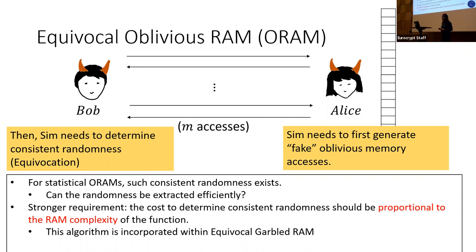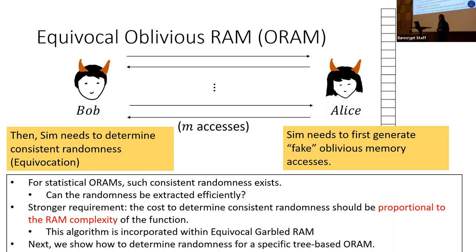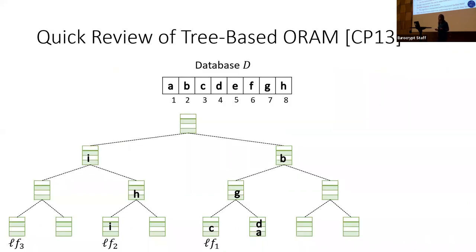The reason we need efficient randomness extraction is that this part is integrated into the garbled RAM and directly affects circuit size. We discuss a particular tree-based ORAM — the techniques apply to any generic tree-based ORAM algorithm — to illustrate this.